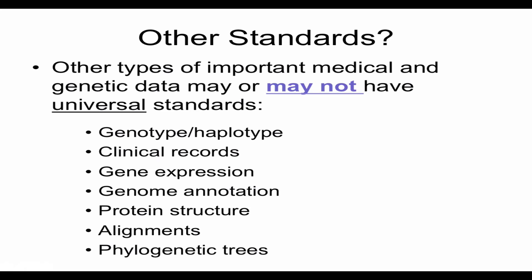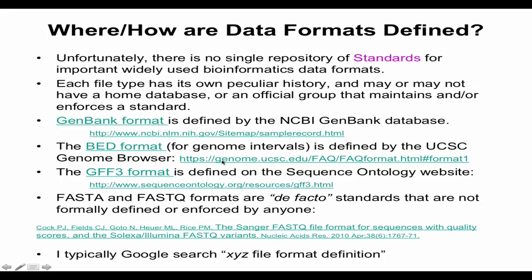Other areas of data — genotypes and haplotypes, clinical records, gene expression values, genome annotation, protein structure, alignments, phylogenetic trees — there's no single scientific body that rules over all of these. Everyone has one or multiple international organizations that try to create and enforce a standard file type. Each one has its own peculiar history. There may or may not be a single home database for a particular type of information. For DNA sequences, there are actually three home databases that all update each other: GenBank, EMBL in Europe, and DDBJ in Japan.